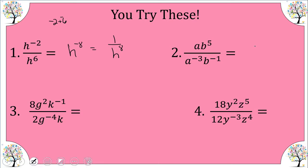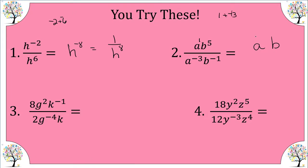Number two: I'll write my bases A and B. For A: one minus negative three gives me four. For B: five minus negative one gives me positive six. So both exponents are positive and they remain in the numerator — A to the fourth, B to the sixth.